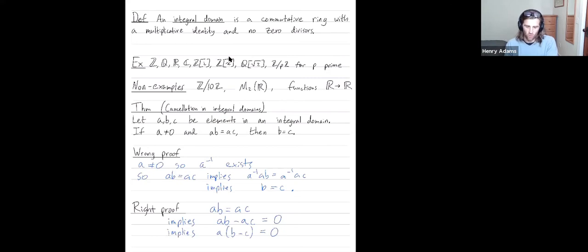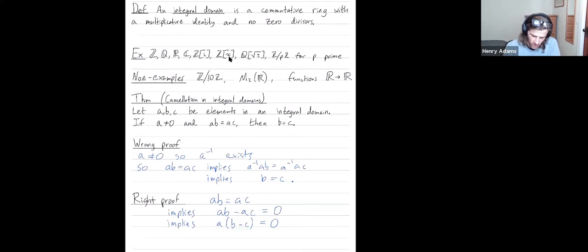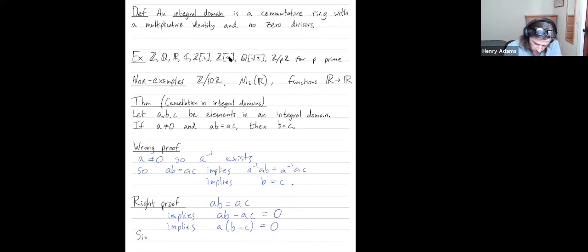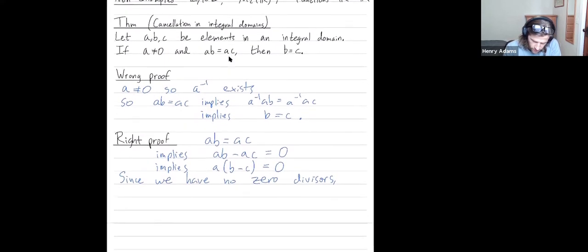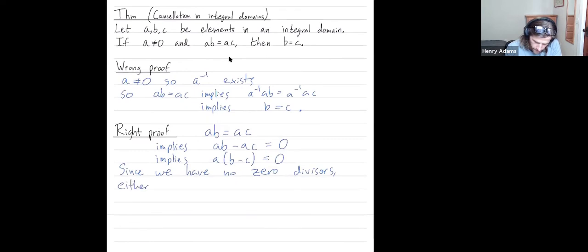And now is where we use the fact that we have no zero divisors. Zero divisors are non-zero elements that can multiply together to give you zero. But if we have no zero divisors, whenever you multiply two things to get zero, one of those has to be zero. So since we have no zero divisors,